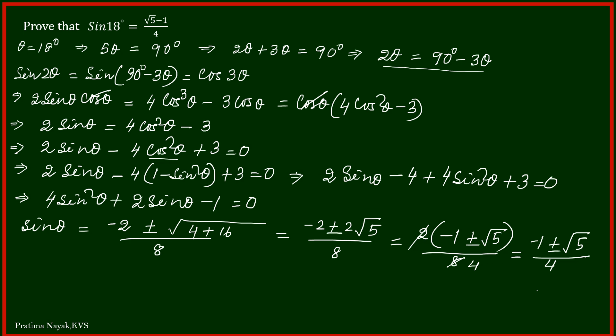So I am getting sine theta as 2 values. One is sine theta equals negative 1 minus square root 5 over 4, and the other is negative 1 plus square root 5 over 4.